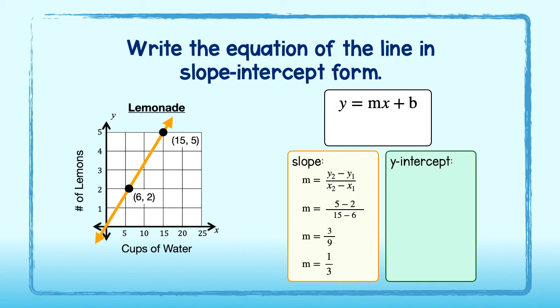So, what does that mean about the unit rate or number of lemons used with 1 cup of water? It means that 1 third of a lemon is used in every 1 cup of water. Great.